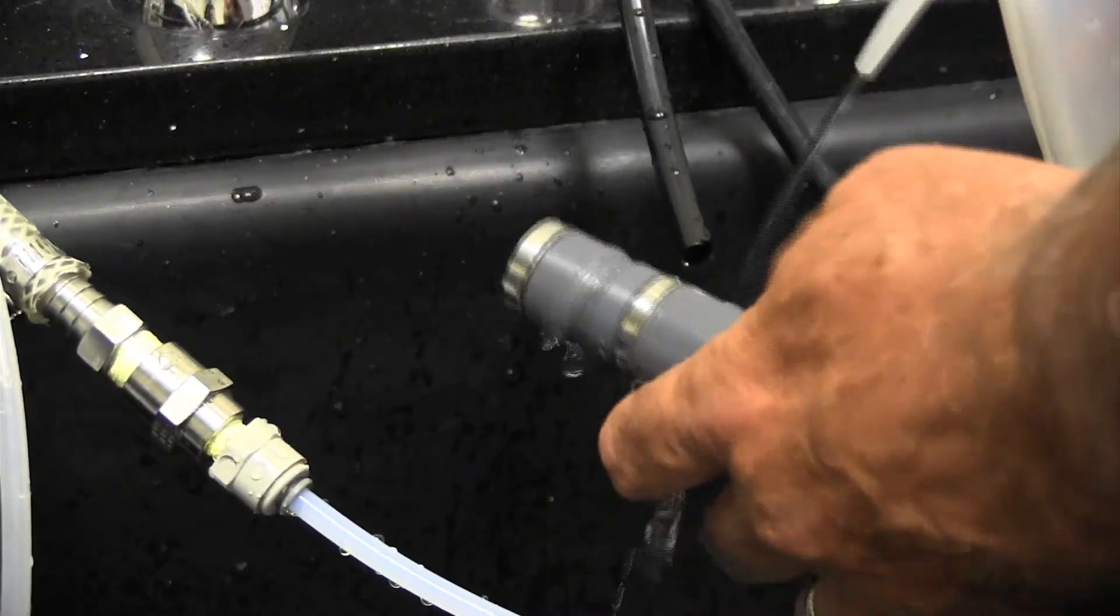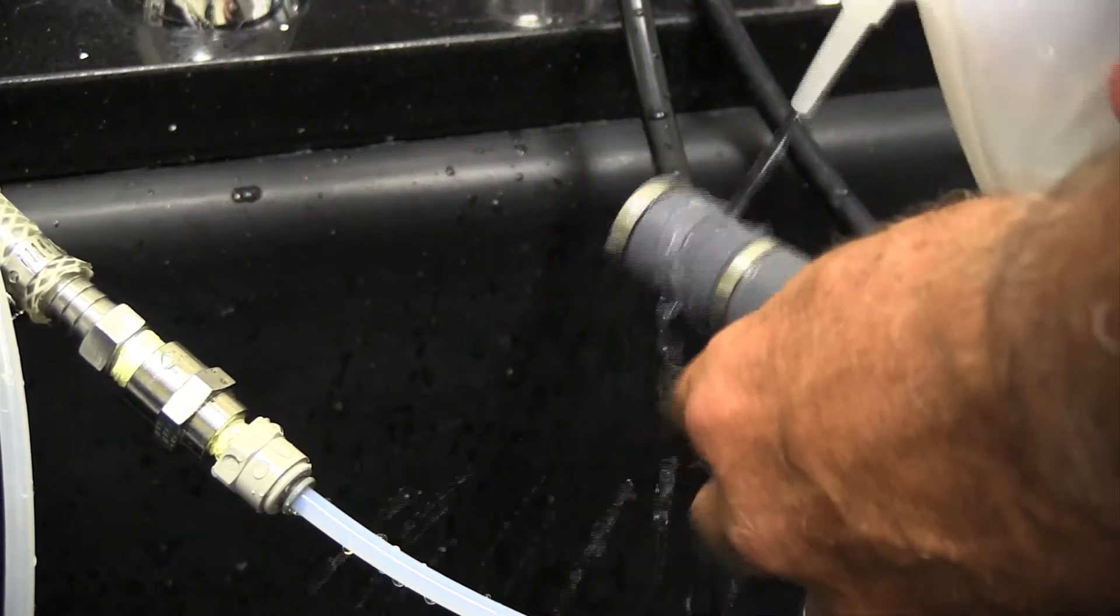Rinse off any excess electrolyte that escapes from the top of the cap and through the vent, and then dry the probe exterior. Now be certain the membrane cap has been hand-tightened as far as it will go.